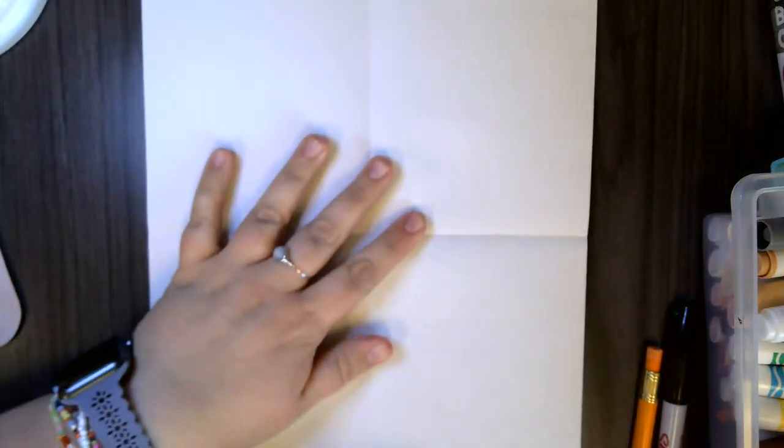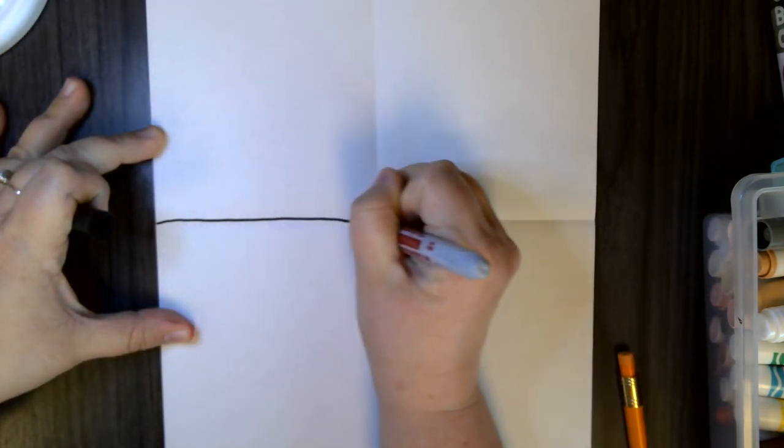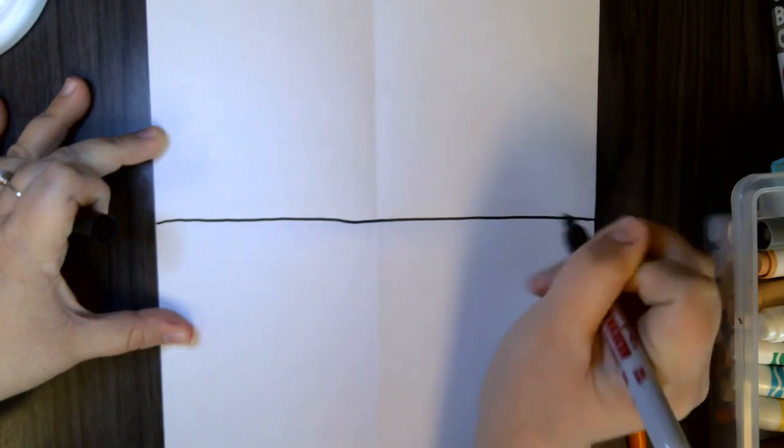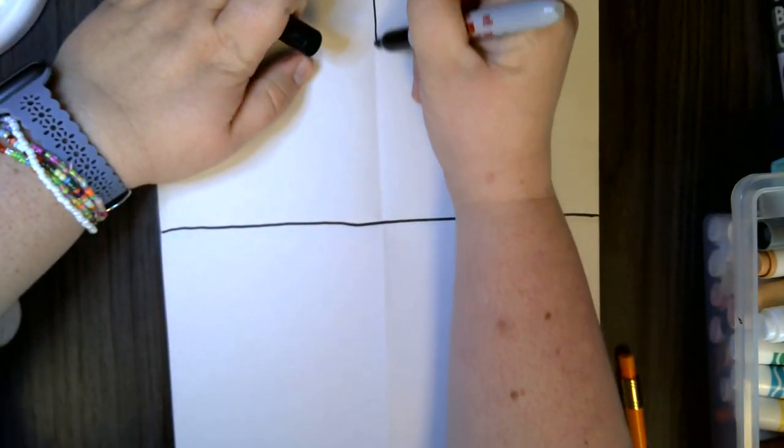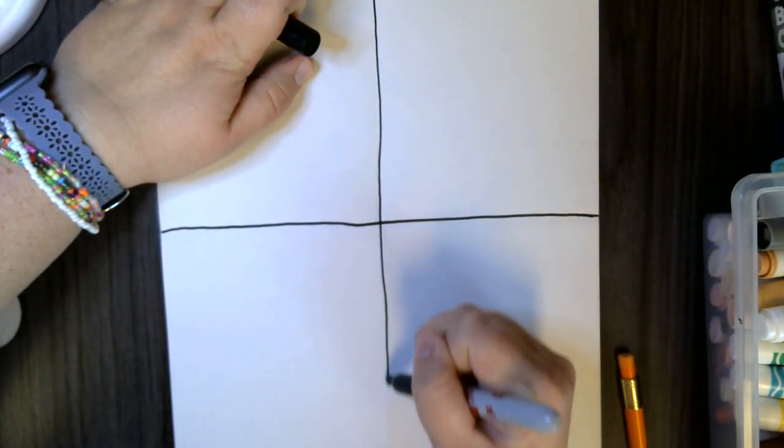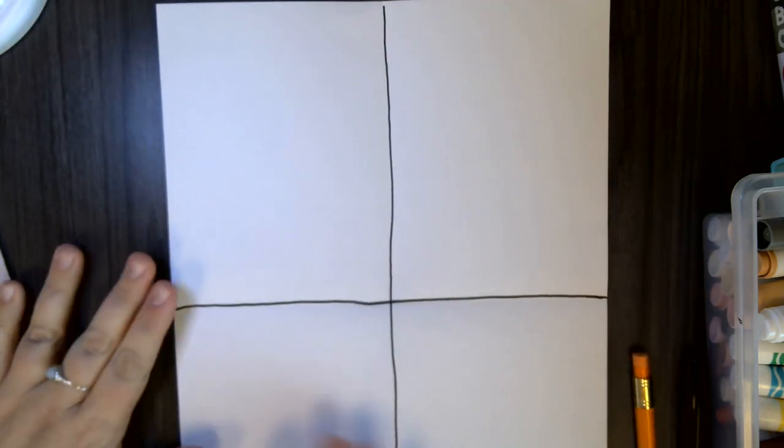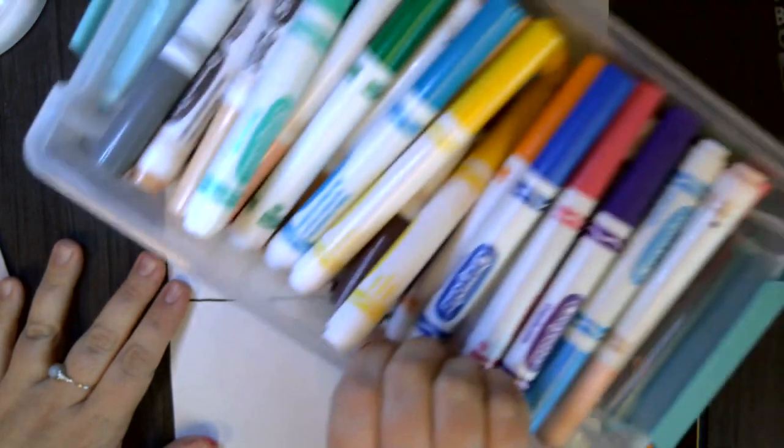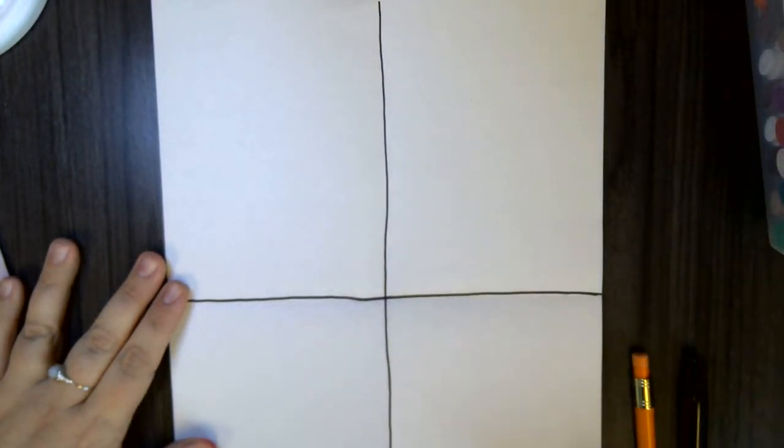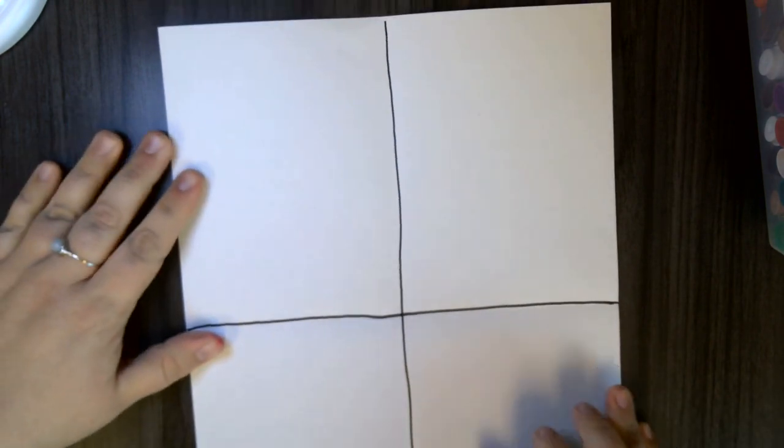Then you're going to open up your piece of paper, and I like to divide my paper by drawing a line along the fold. After you've done that, you're going to take some of your colors. I'm going to use markers, but you can totally use paint, color pencils, crayons, whatever you have.